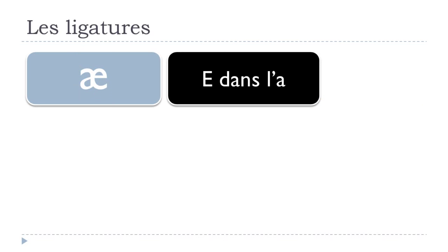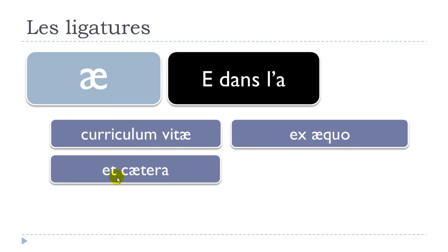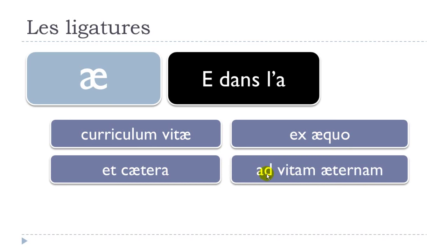Let's see a few examples of words that use this 'e dans la' letter. The first one is 'curriculum vitae,' and then 'exæco,' and 'etc,' and 'ad vitam æternam.' If you look carefully at these words, you realize that this letter comes directly from Latin. It's quite rare to see this letter in the French language. I've chosen the more common examples because the others you will probably never use or encounter, but anyway, it is rare but it does exist.